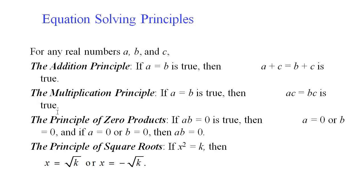Here are some of the legal steps we can take when solving equations. We can always add or subtract something to both sides, multiply both sides by the same thing, and divide both sides by the same thing. We try not to multiply by zero since that cancels things out, and we can never divide by zero.